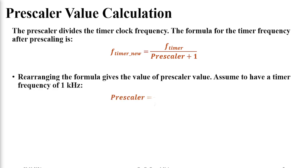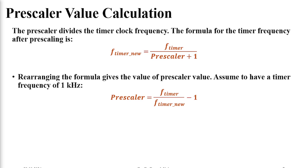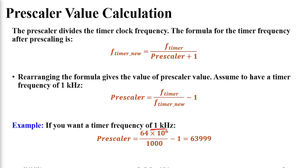Rearranging the equation, we can get the prescaler value: prescaler = (timer frequency / new timer frequency) − 1. For example, if we have a 64 MHz clock connected to the timer and we want to bring the timer frequency down to 1 kHz, the prescaler value is calculated as 64,000,000 divided by 1000, minus 1 — which equals 63,999. We will note this number.